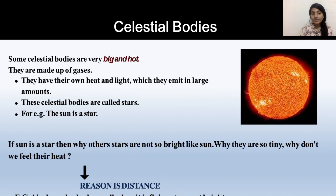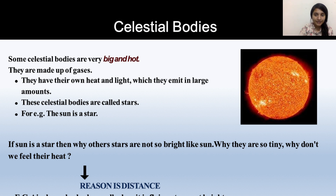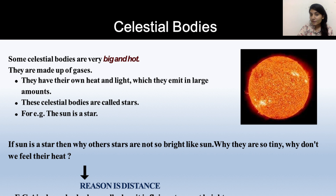Some celestial bodies are big and hot, made up of gases, and they have their own heat and light — we call them stars. One interesting fact is that the Sun is also a star because it has its own heat and light. Now, why are we able to see the Sun closer to Earth while stars appear very small?